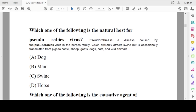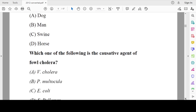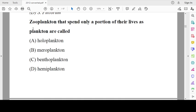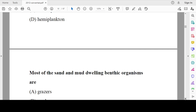The natural host for pseudorabies virus: pseudorabies is a disease caused by pseudorabies virus. This virus belongs to the herpes family and generally affects swine but is also transmitted from pigs to cattle, sheep, goat, dog, and wild animals. The causative agent of fowl cholera is Pasteurella multocida. Zooplankton that spend only a portion of their life as plankton—notice 'only portion' is the key word—the answer is meroplankton.